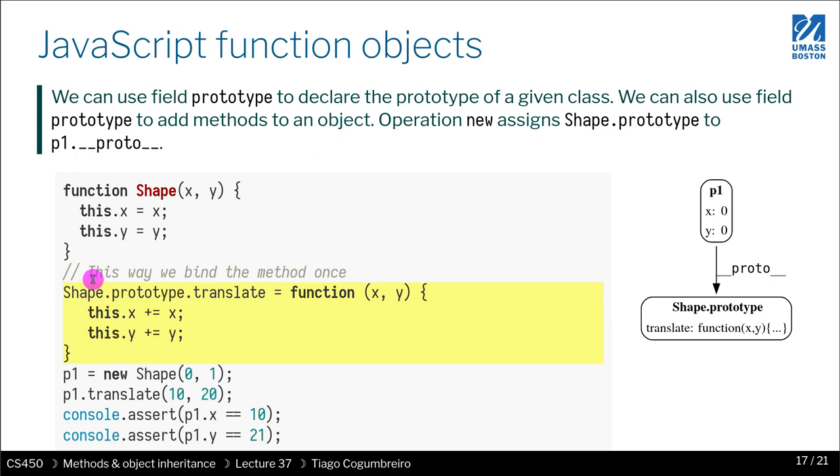So the actual better way of defining methods is by the prototype field. Whenever I create P1, what I'm actually doing is I'm pre-defining what is the underscore underscore proto of the instance, because I set the prototype. This might be confusing because the name is similar. We have underscore underscore proto, and then we have prototype. The easier way to think is shape.prototype is going to be copied to the prototype of every instance. It's kind of like the template that is going to be used and assigned to each instance.